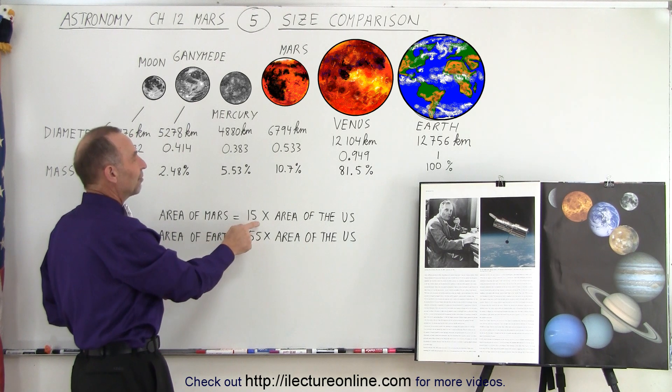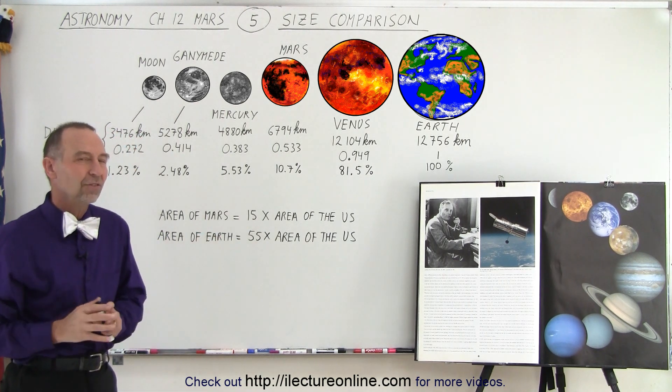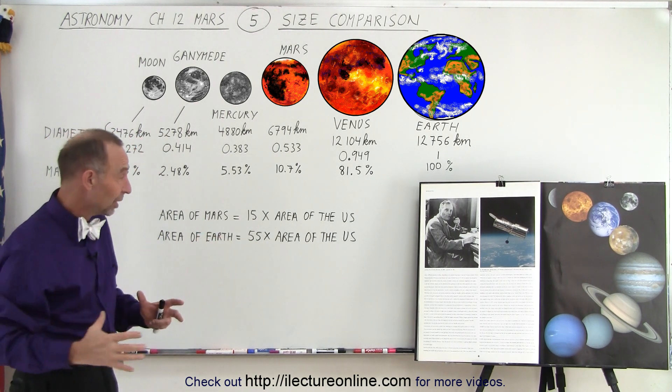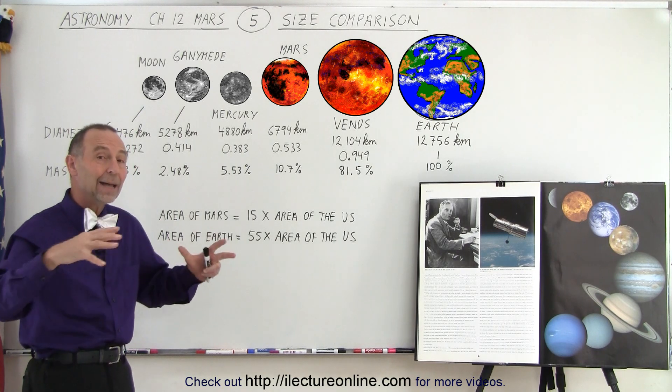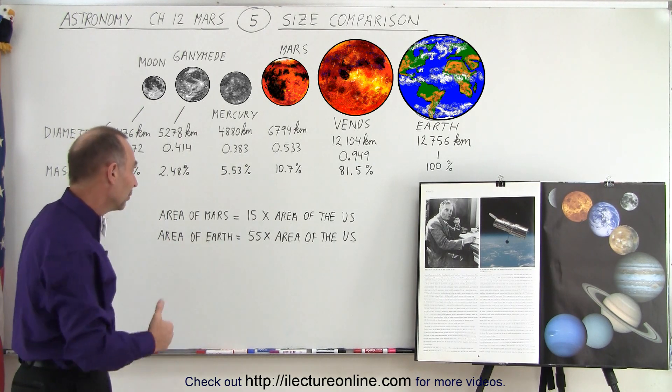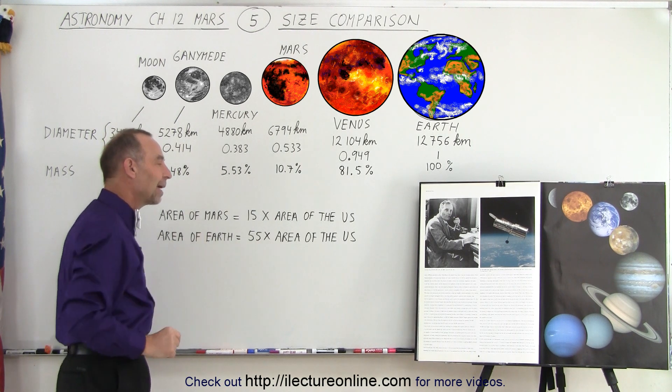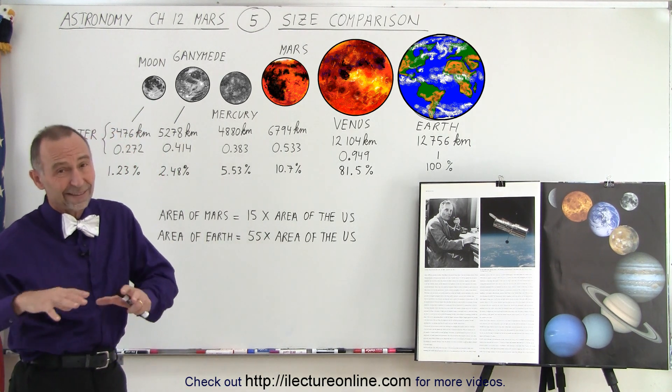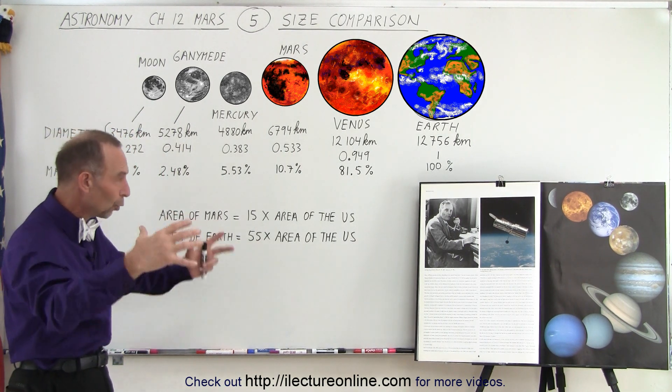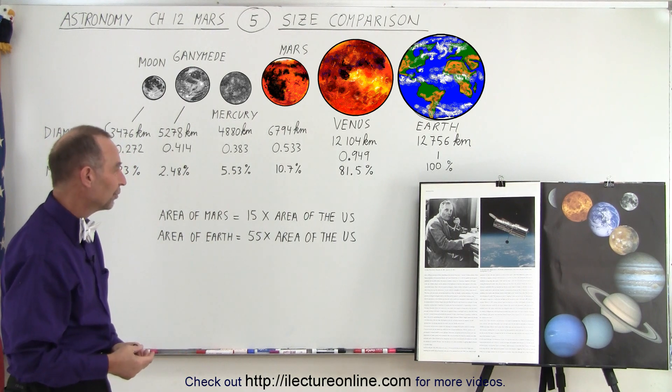To give another perspective on that, the area of Mars is about 15 times the area of the United States. Now, the United States is a very big country, but Mars is 15 times the size of that. Compared to that, the area of the Earth is about 55 times the area of the United States. The United States takes up about 2% the total surface area of the Earth.